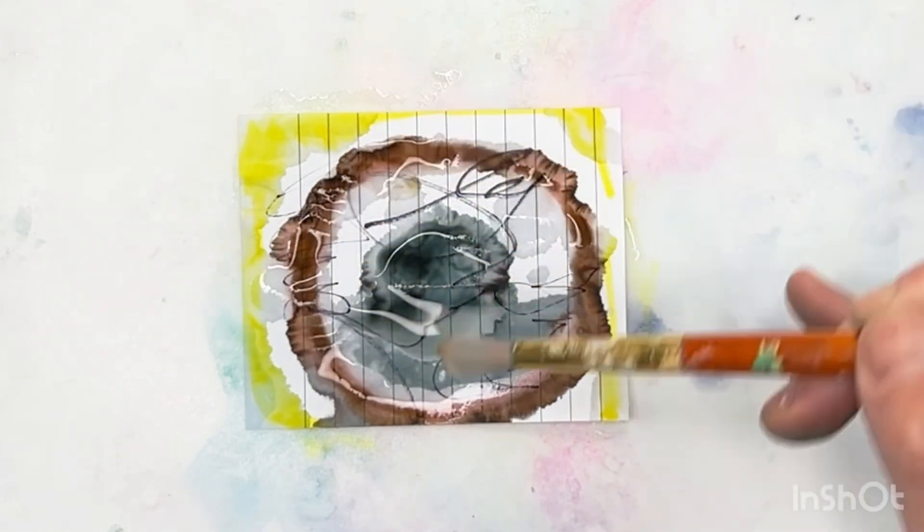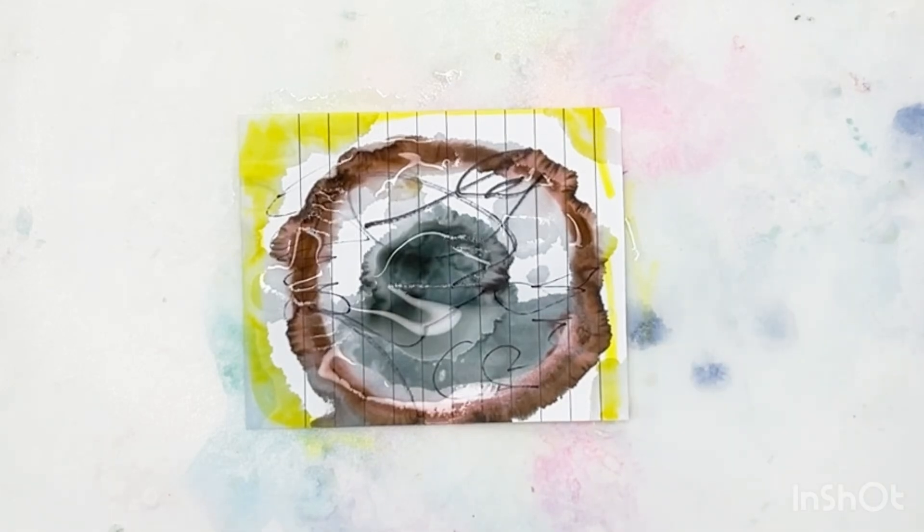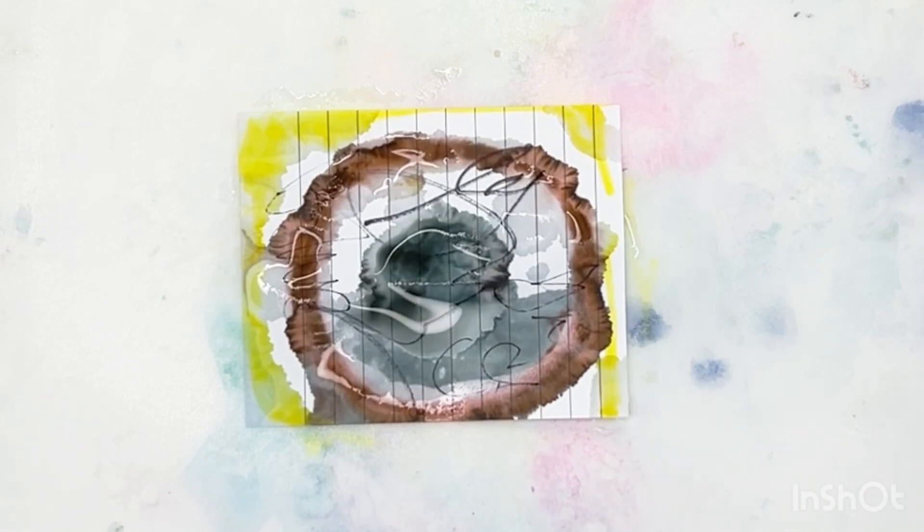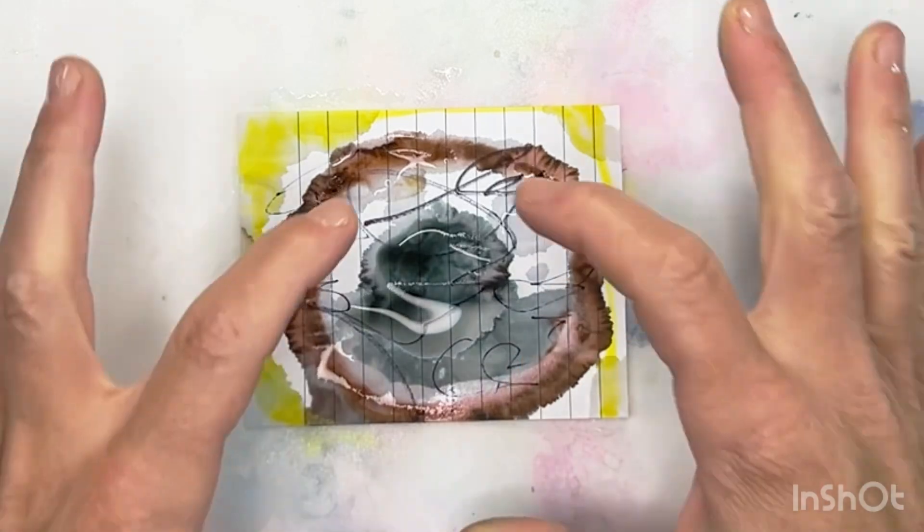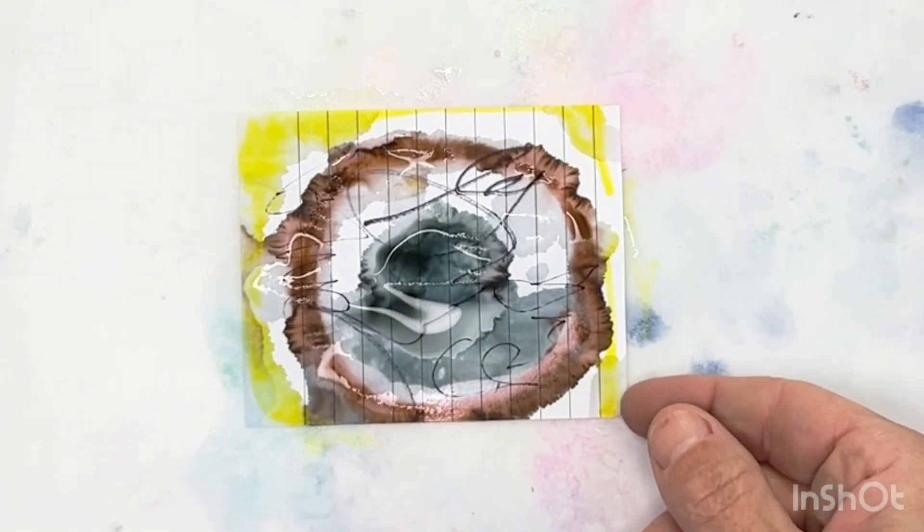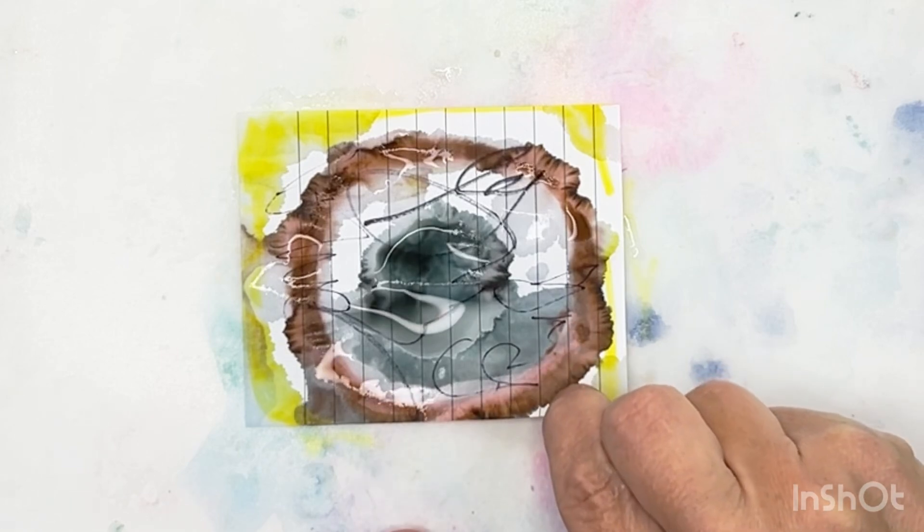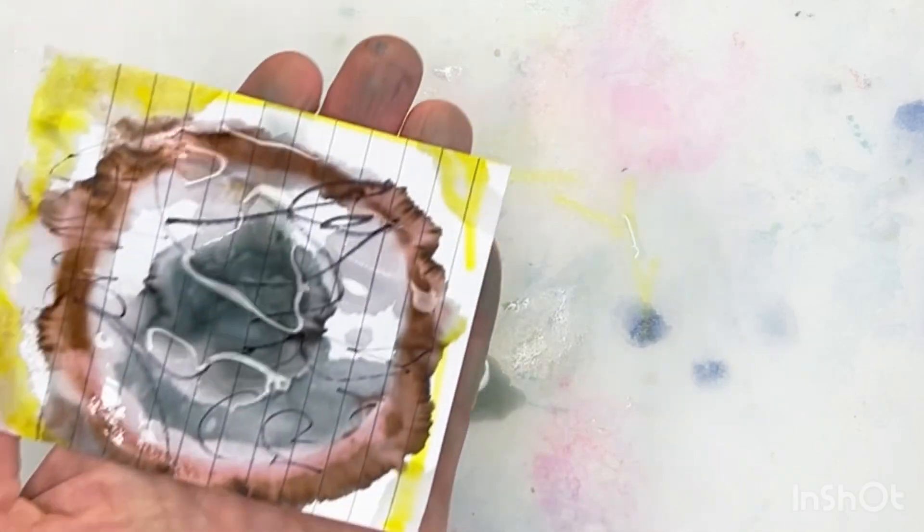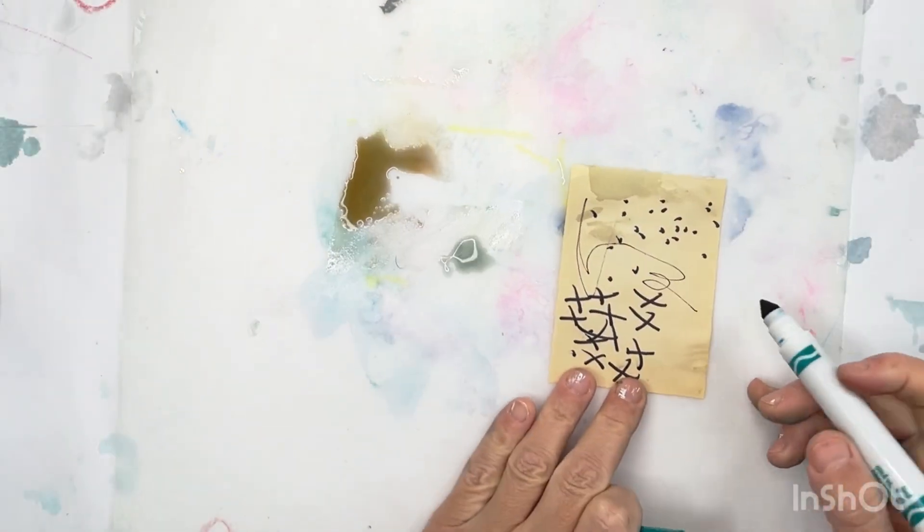Now you can do this with the Sharpie markers, but you have to use alcohol in order to get it to activate. It's not going to activate by water. I'm loving this and you can see with the brown, you can see how it's pulling out pinks and oranges. That's good stuff. So I don't want to disturb this because I want it to keep running.